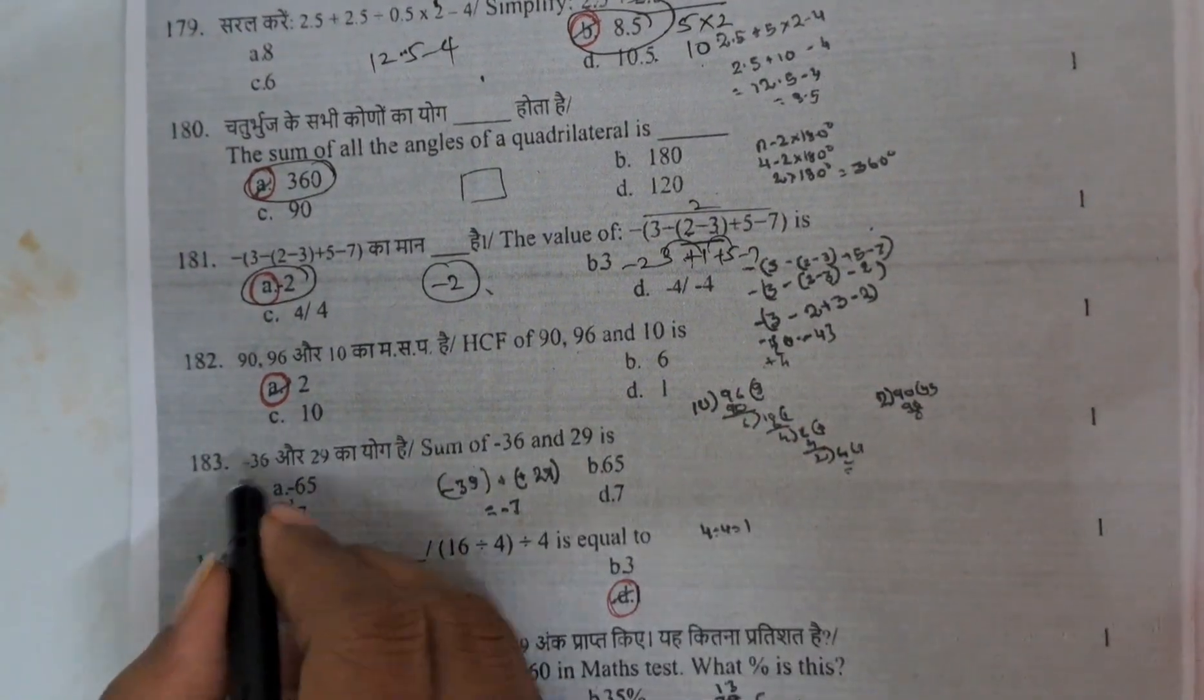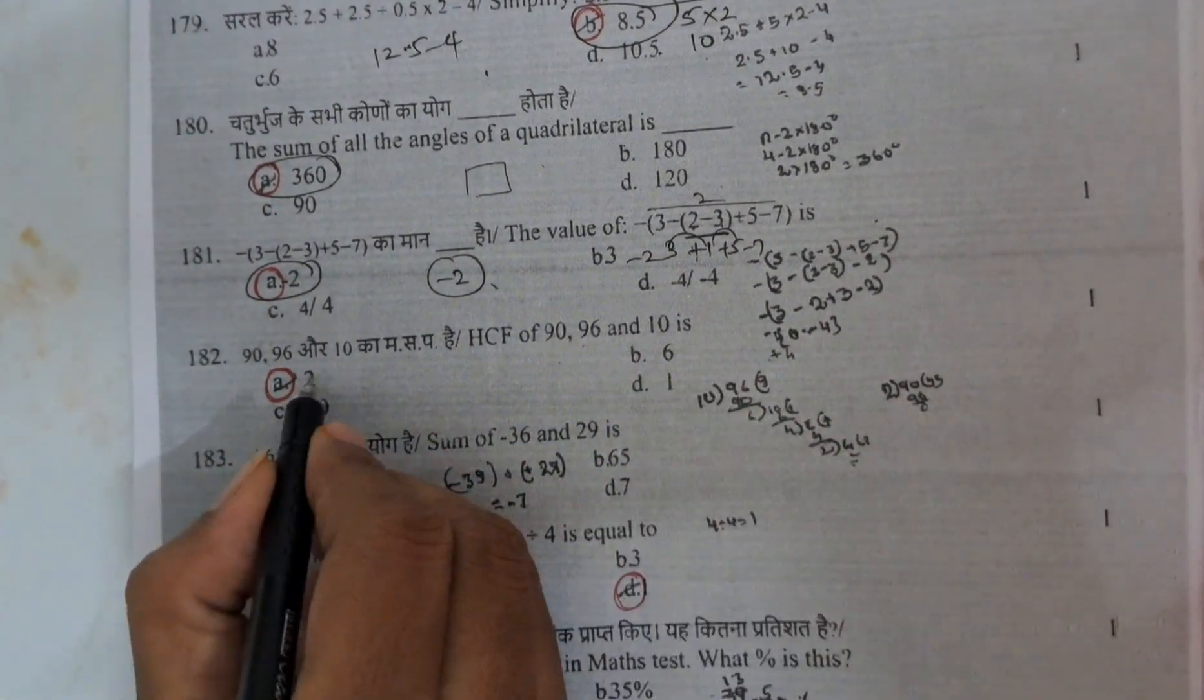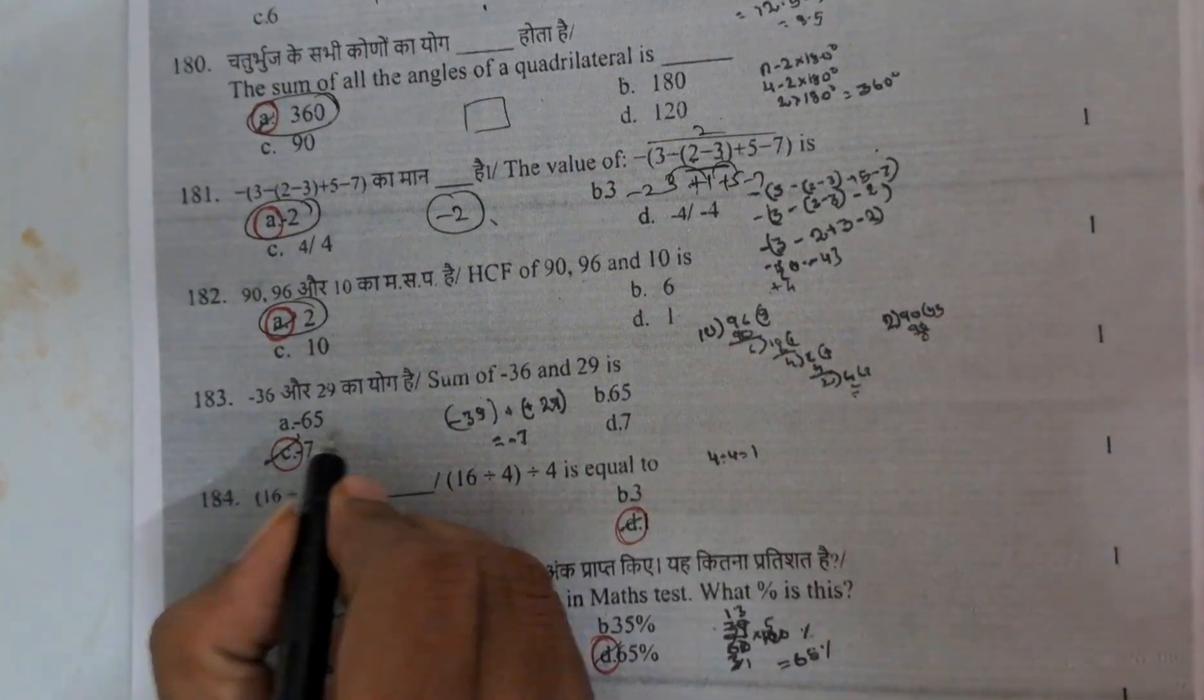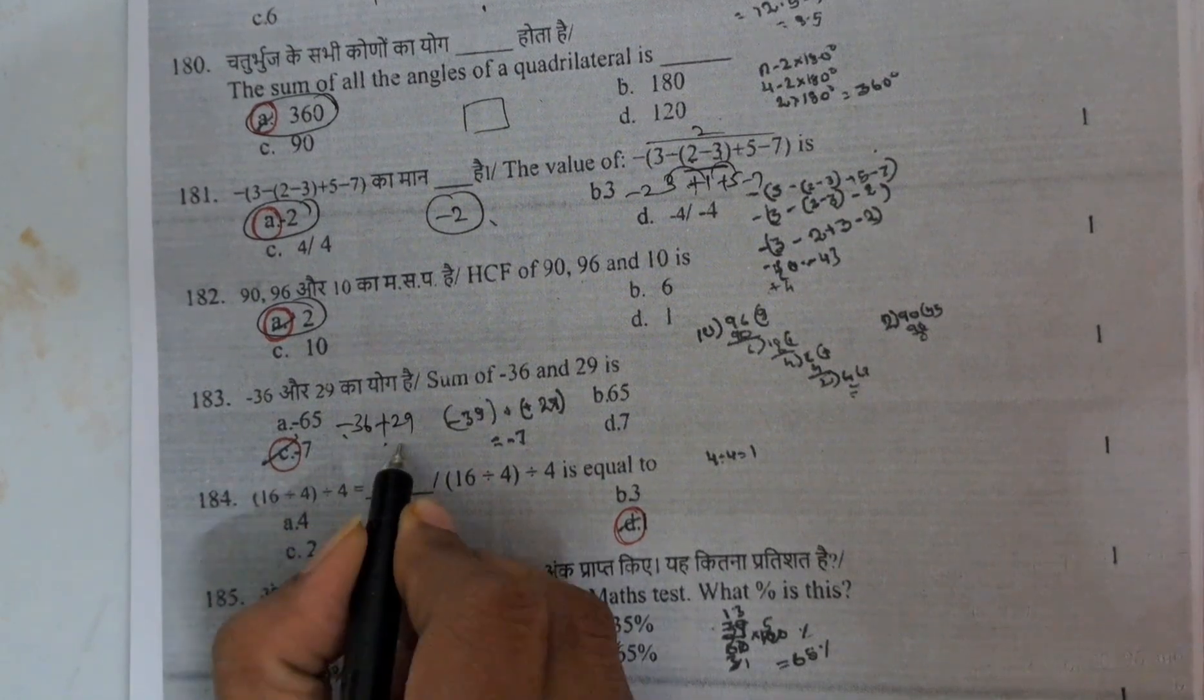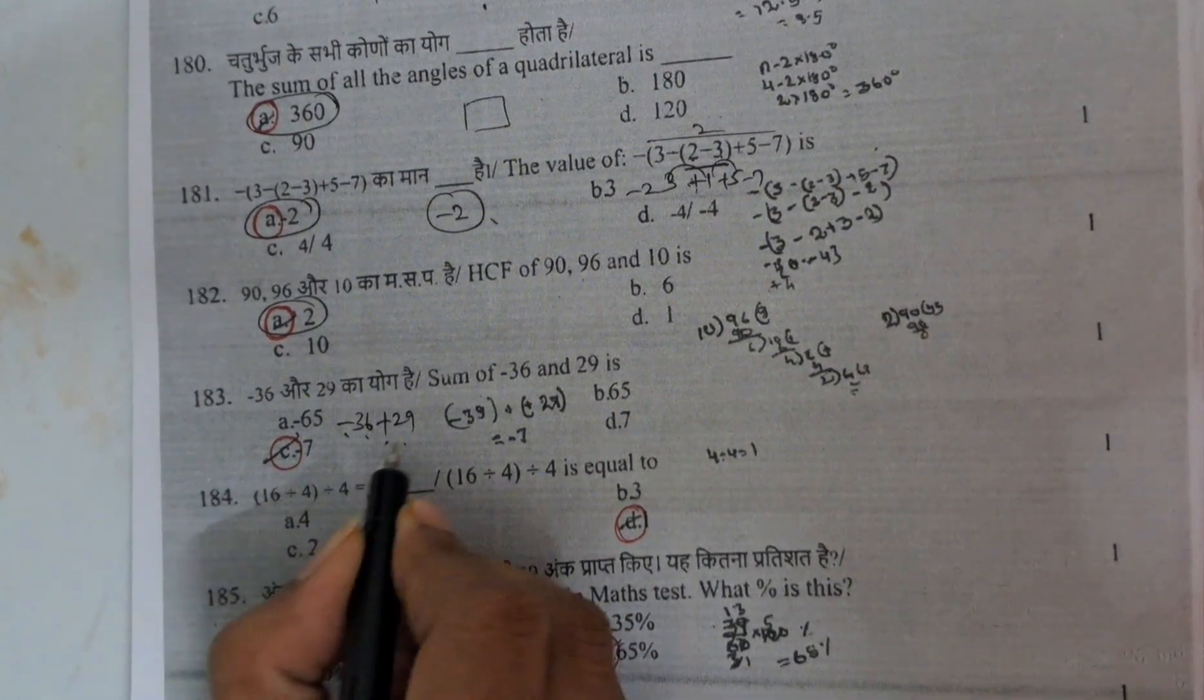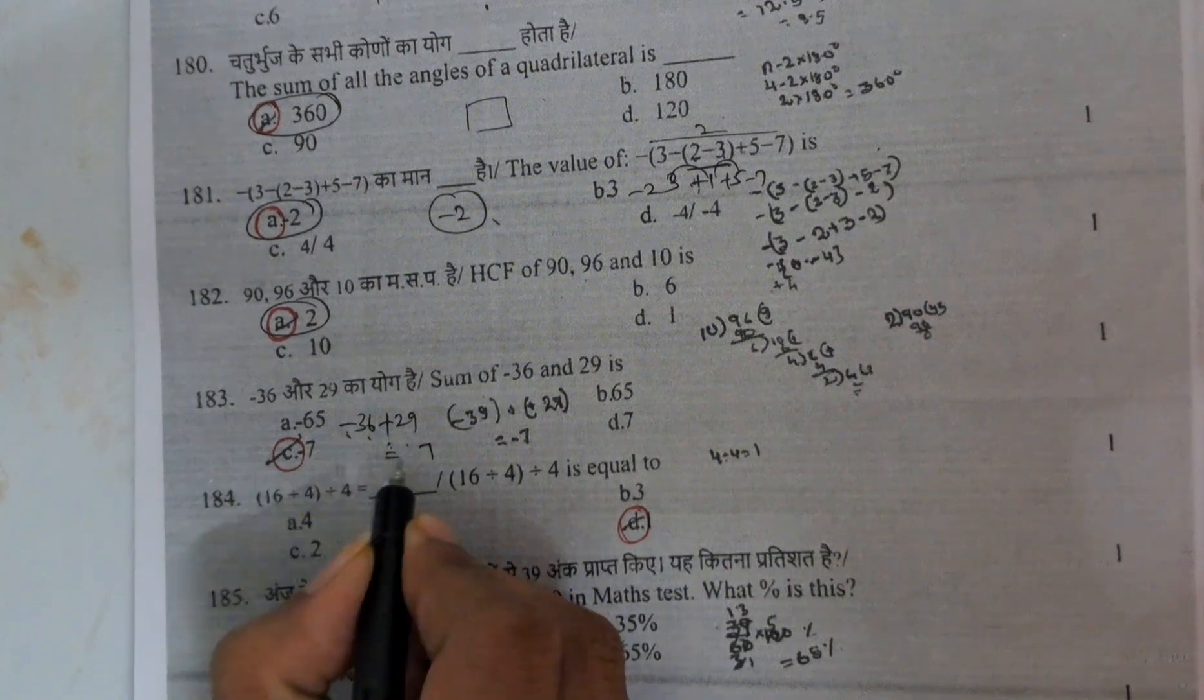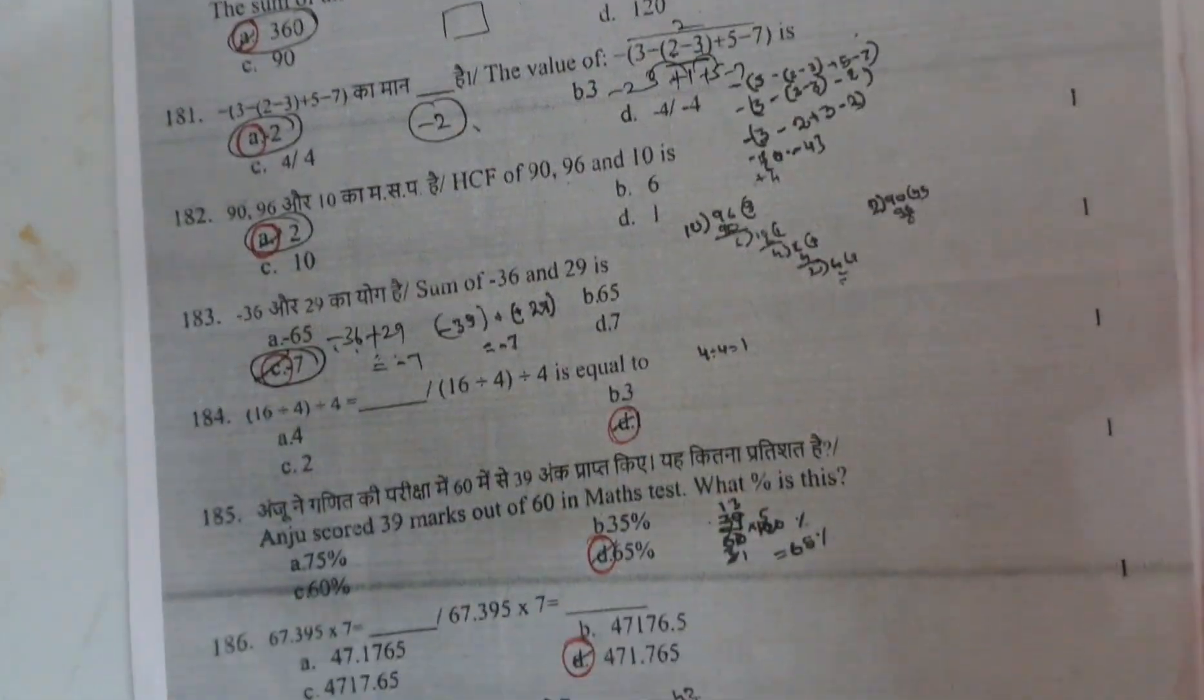And here HCF. If you do the HCF, 90, 96, 108, the answer is 2. And next, sum of minus 36 plus 29. If minus and one plus value means you need to do the subtraction. Subtraction 36 minus 29 is 7. Here bigger value is minus value. That's why answer is minus 7.